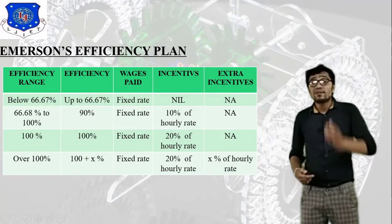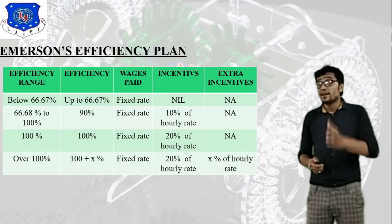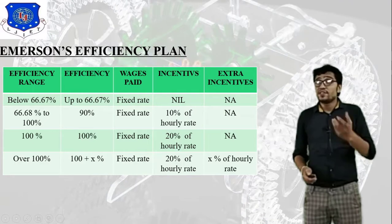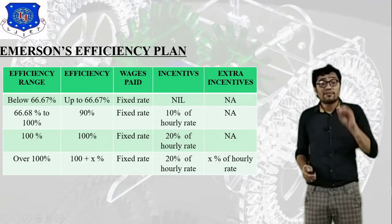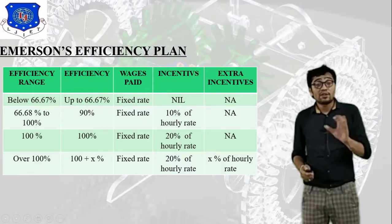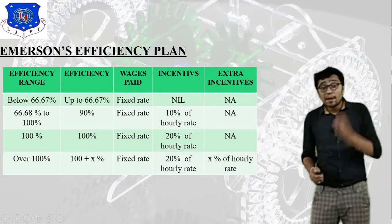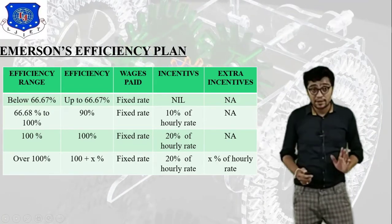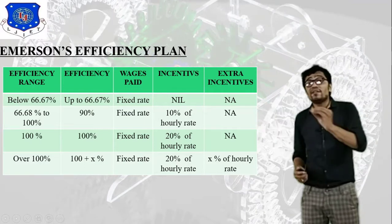Level three corresponds to exactly 100% efficiency. At this level, the worker receives fixed rate plus 20% of the hourly rate as wages paid. There are no extra incentives given to the worker at level three.